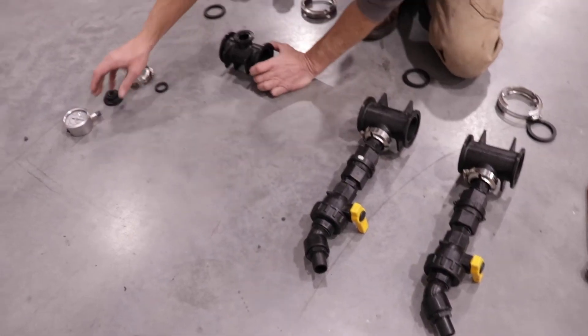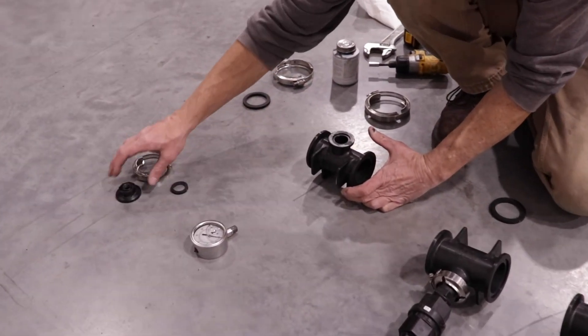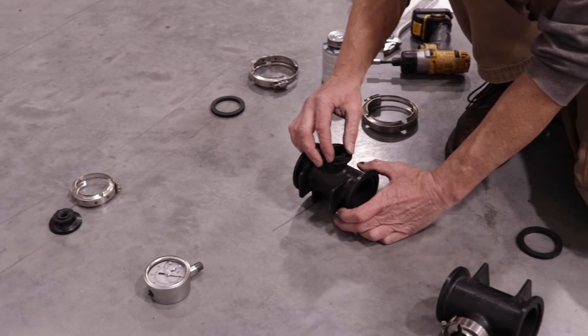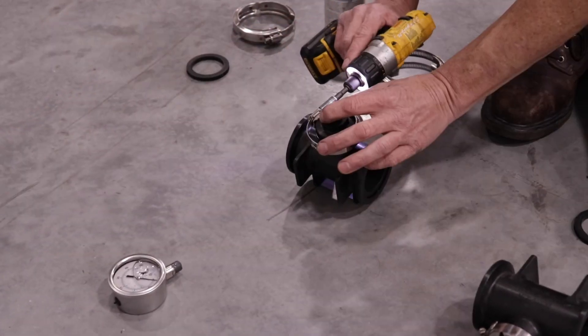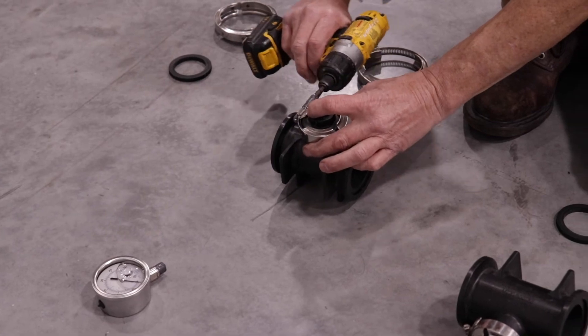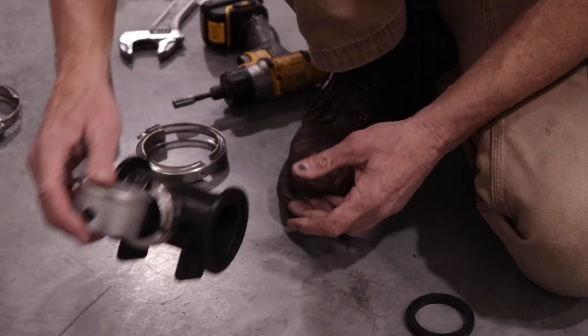After constructing the manifold kit, we'll be taking a look on how to build the gauge kit. Attach a quarter inch female thread adapter to the two inch manifold part using gasket and clamp. Install pressure gauge provided into the quarter inch female port.